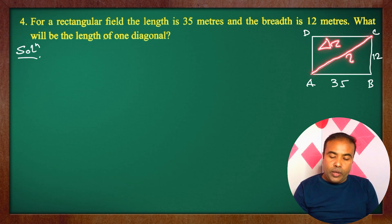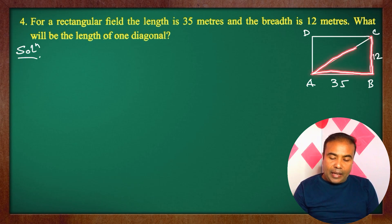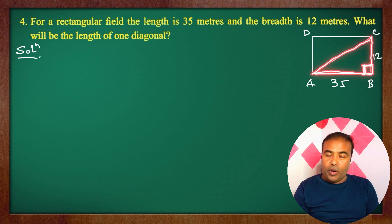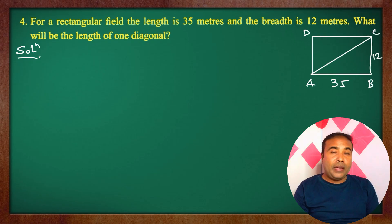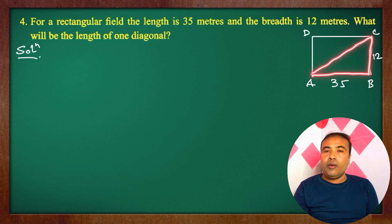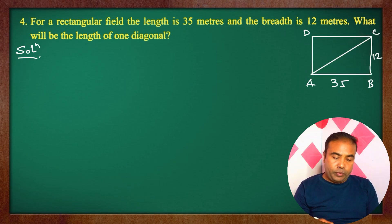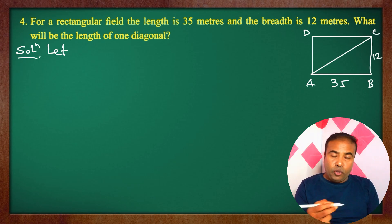This is a right-angle triangle. If you look at the triangle, the right-angle triangle is formed. Each dimension is important. We will apply the Pythagorean Theorem formula to solve this. First of all, I will write this formula.